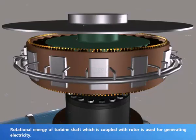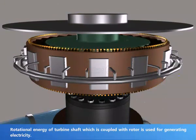The runner vanes rotate automatically to avoid shock when the water strikes the vanes. Rotational energy of the turbine shaft, which is coupled with the rotor, is used for generating electricity.